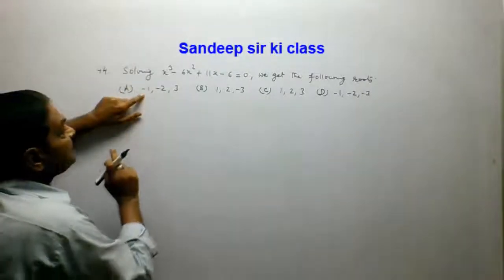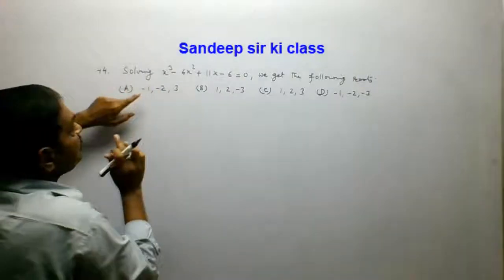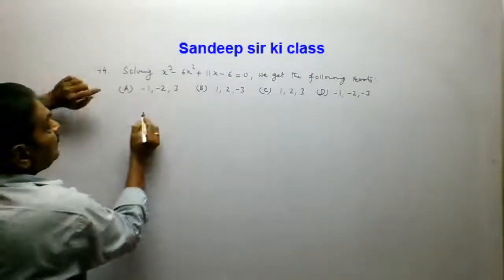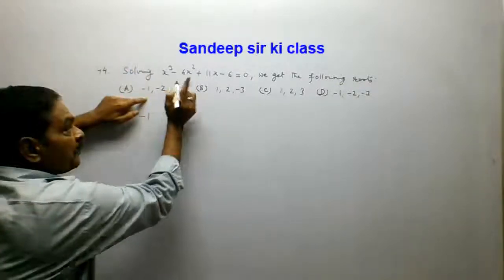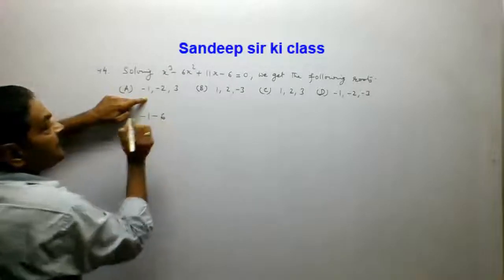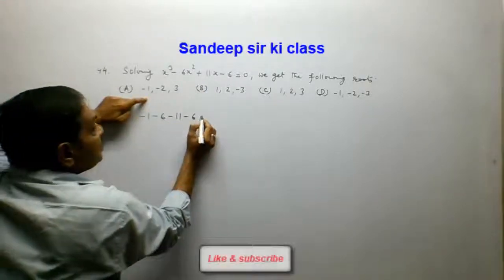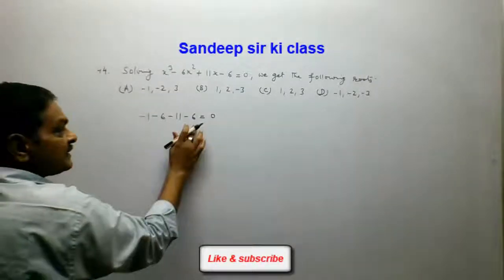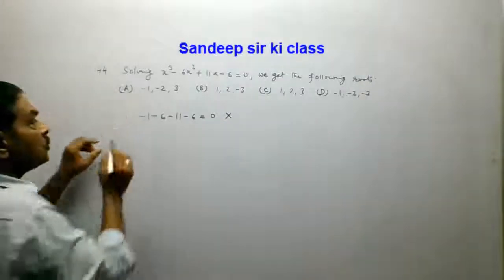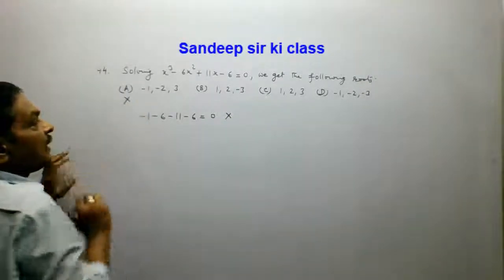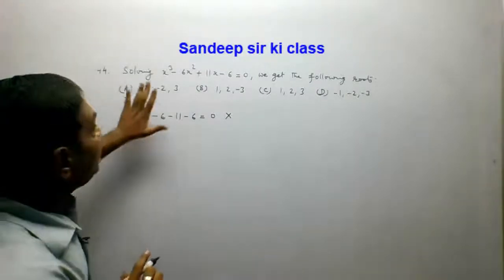Option A gives x = -1. Substituting: (-1)³ - 6(-1)² + 11(-1) - 6 = -1 - 6 - 11 - 6, which is a negative number and clearly not equal to 0. So option A is not correct and -1 is not a root of the equation.